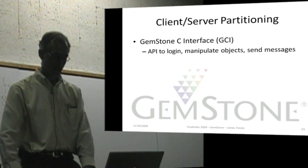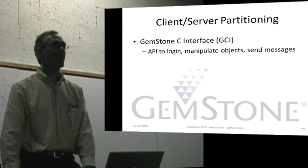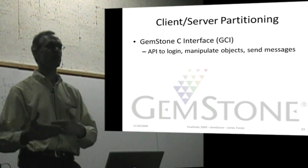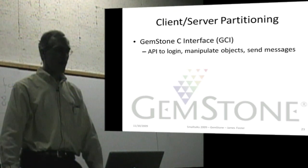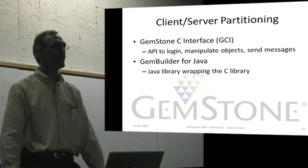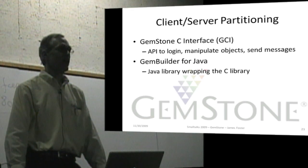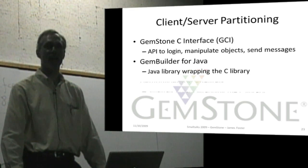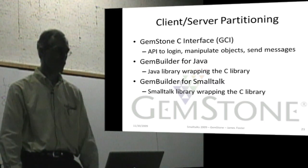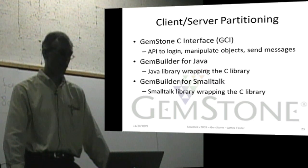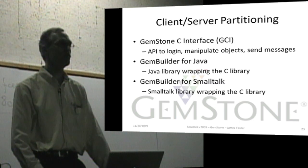There is partitioning between the client and the server. There's a C API used to interact with GemStone — to log in, manipulate objects, and send messages. There's also a Java library that wraps the C library, so if you're writing in Java you can communicate with GemStone Smalltalk. Most GemStone systems wrap the C library with Smalltalk.